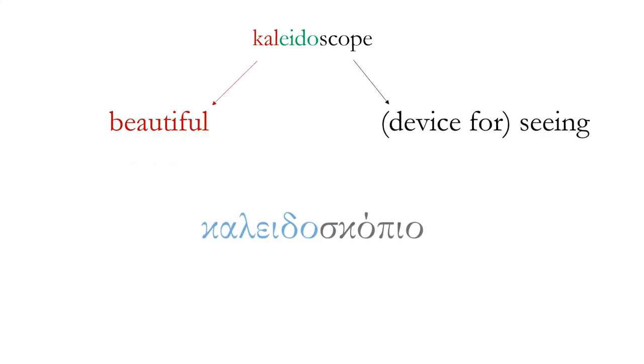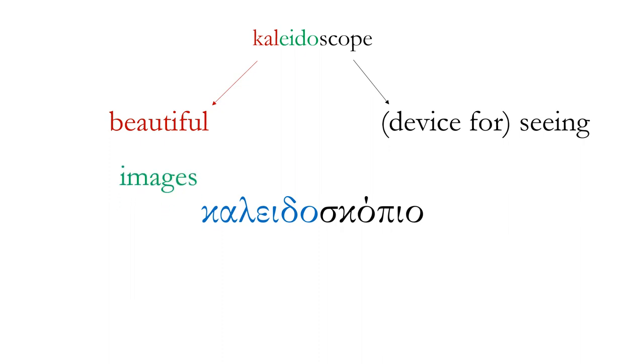And finally, one that we all might know, a kaleidoscope. Kalo means beautiful. Eidos is another word for image. Something that shows us beautiful images, something like this.